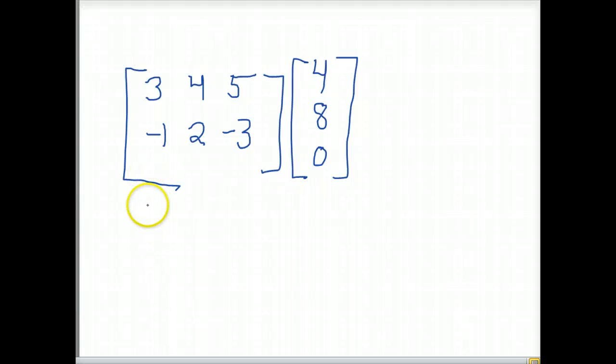For example, this is a 2 by 3 matrix, and this is a 3 by 1 vector. The inner dimensions must agree with each other and be the same value, otherwise multiplication will not work.